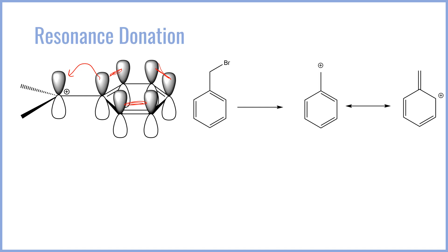Consider this benzyl bromide species. Although this is a primary leaving group — the carbon with the leaving group only has one other carbon bond besides hydrogen — it can actually undergo SN1. Normally we would think a primary carbocation is terrible and this won't react, but actually the leaving group can depart to give the carbocation. Why? Because that carbocation is resonance stabilized by the benzene ring — it can delocalize completely into the ring at the ortho and para positions. Because of this resonance stabilization, benzyl bromide is actually able to do SN1 reactions.